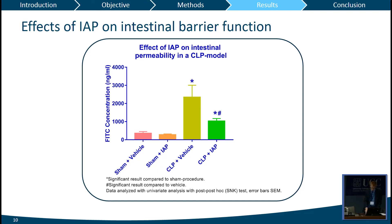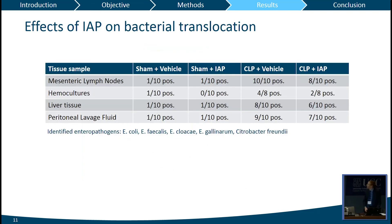To further assess this, we also measured bacterial translocation by identifying enteral pathogens with MALDI-TOF. In sham groups, a positive culture was quite infrequent, while in the CLP groups positive cultures were very common. However, this difference was not significant. There was a reduction of about 20 to 25% after intestinal alkaline phosphatase treatment — a tendency toward lower bacterial translocation, but not statistically significant.